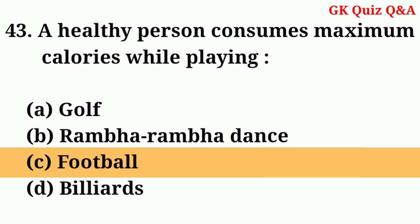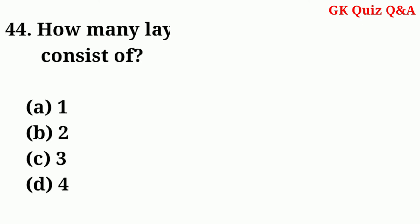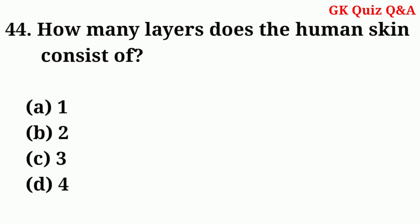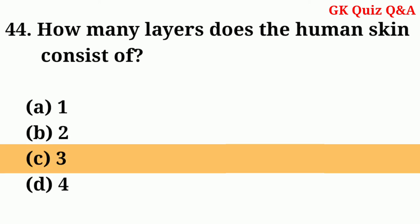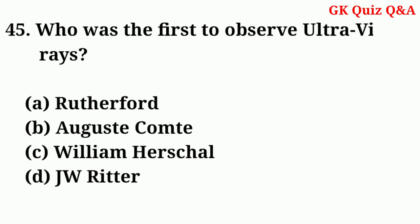A healthy person consumes maximum calories while playing — Answer: C — Football. How many layers does the human skin consist of? Answer: C — Three layers.